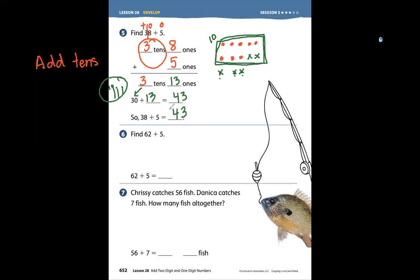Problem number 6 says 62 plus 5. So we have 6 tens and 2 ones. 62. And then we add 5 more ones.